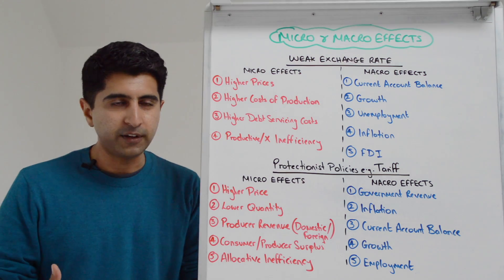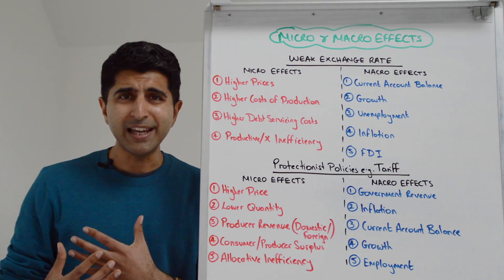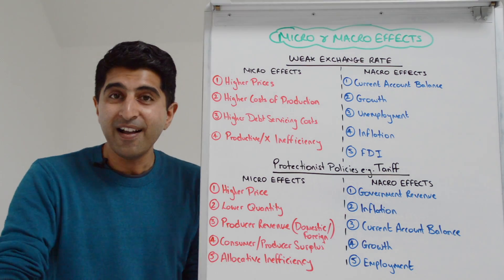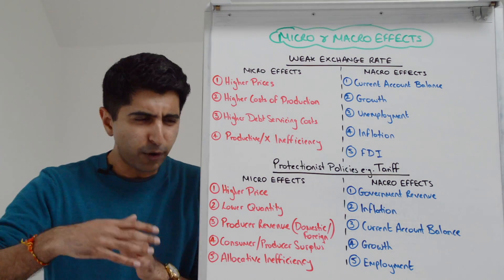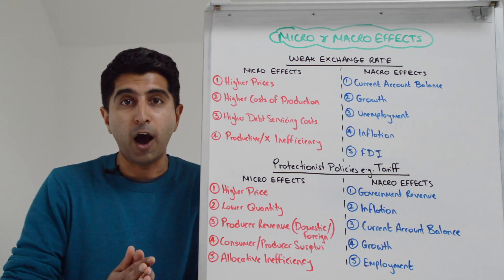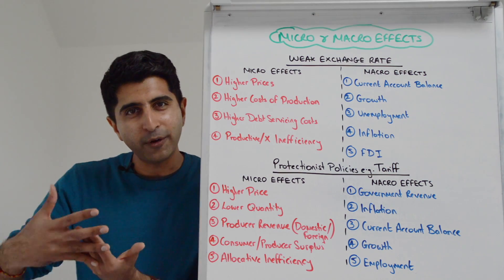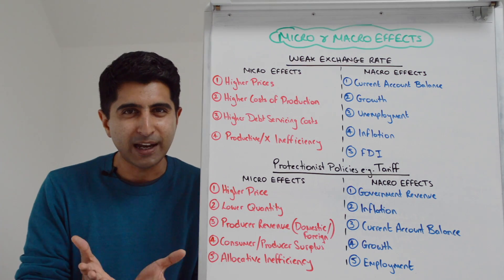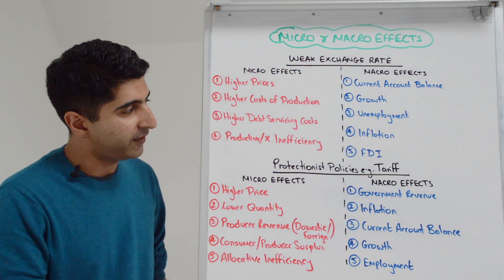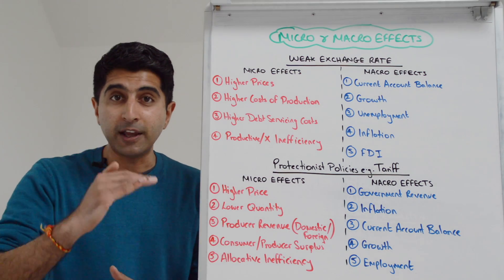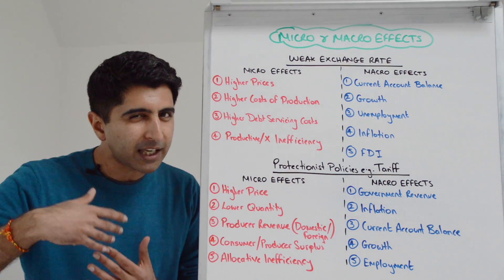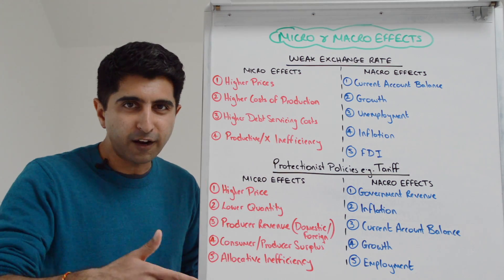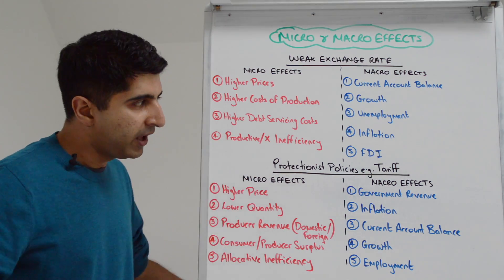Think of this: if you're an exporting firm, you're naturally seeing the benefits of cheaper exports because your currency is weak — you've done nothing to deserve that, it's just happening naturally as a benefit to you. Also, if a major competitor of yours happens to be imports, when imports are more expensive with a weak exchange rate, again, that's a lovely natural benefit to you without doing anything to deserve it. These natural automatic benefits, especially if an exchange rate is weak for a prolonged period, can create complacency and inefficiency, with costs rising elsewhere in the business. That is a unique kind of micro effect worth exploring.